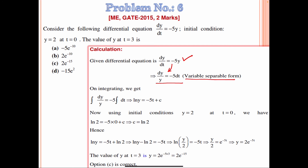On integrating, we obtain log y = −5t + c. Applying the initial condition at t = 0, y = 2: log 2 = c. Substituting, log y = −5t + log 2, which gives log(y/2) = −5t, so y/2 = e^(−5t), meaning y = 2e^(−5t).